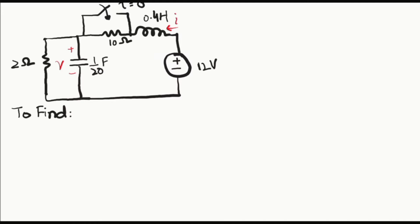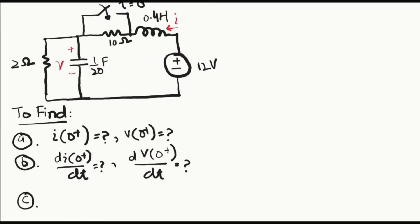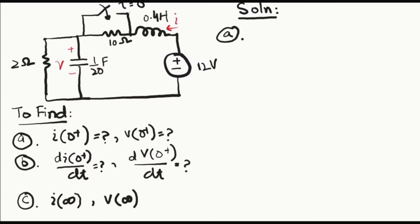Given all these values, we have to find: part A — the inductor current at t equals zero negative; part B — the current and voltage just after the switching time; and part C — the final values of current and voltage. In part A we write zero positive because i(0+) equals i(0−). Let's begin the solution.